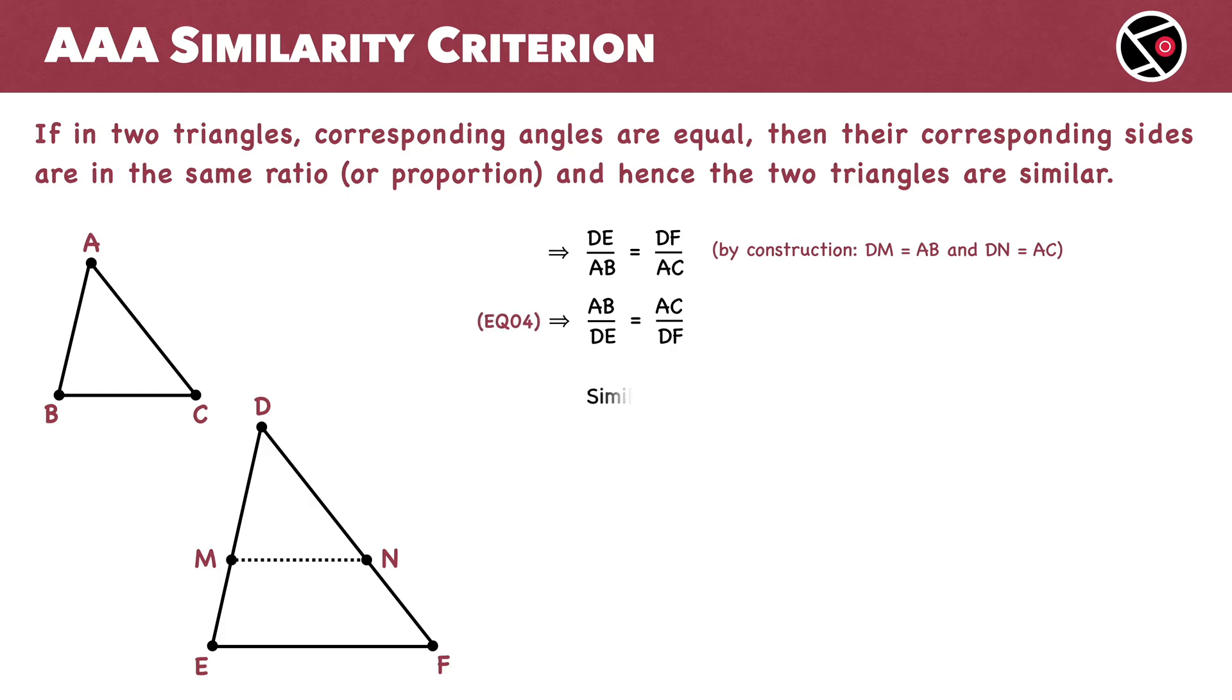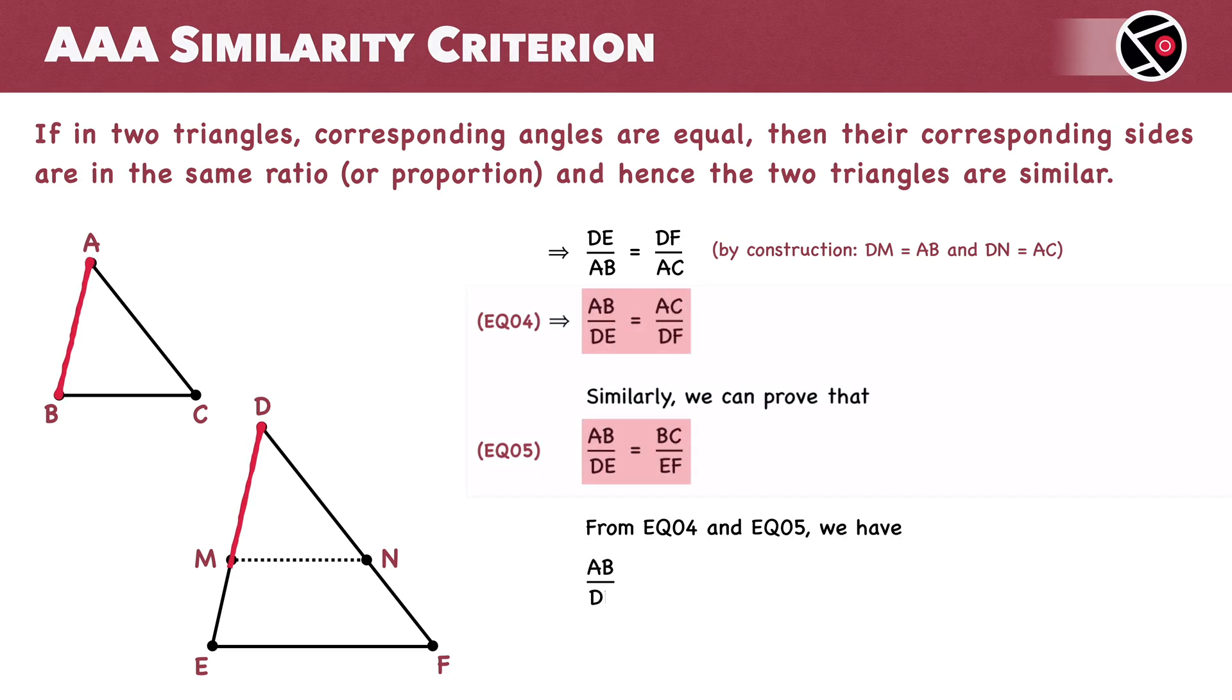Similarly, we can easily prove that AB by DE equals BC by EF—this is Equation 5. From Equations 4 and 5, AB by DE equals BC by EF equals AC by DF. We have proven that for two triangles with equal corresponding angles, the corresponding sides are in the same ratio. Now, by the SSS criterion for similarity, these two triangles are similar to each other. Triangle ABC is similar to triangle DEF.